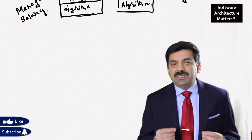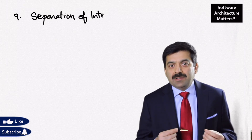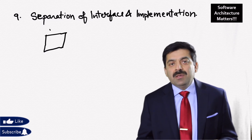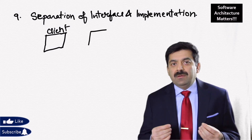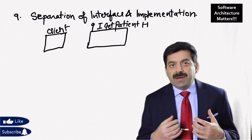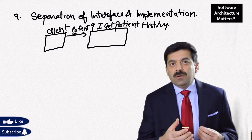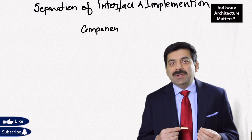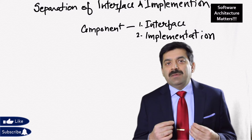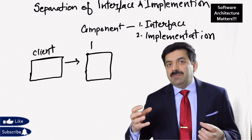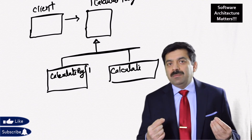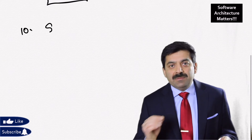The ninth technique is separation of interface and implementation. Any component has two parts: an interface and an implementation. The interface is a contract to the client application — you provide these parameters, call this method, and I'll return this information. Clients should always be coded against the interface. The benefit is that we can change the implementation — use a better algorithm, change the database access technology — as long as we support the same function call, without affecting the client.